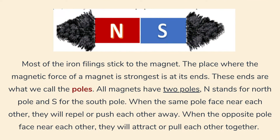Look at the picture below. As you can see, most of the iron filings stick to the magnet. The place where the magnetic force of a magnet is strongest is at its ends. These ends are what we call the poles. All magnets have two poles — N stands for north pole and S for the south pole. When the same poles face near each other, they will repel or push each other away. When the opposite poles face near each other, they will attract or pull each other together.